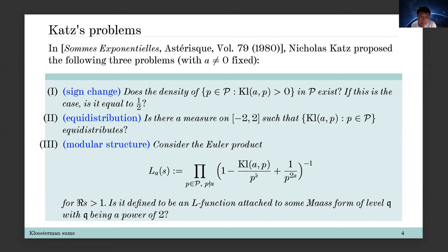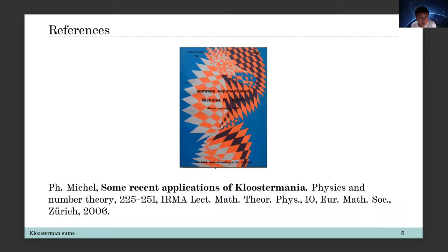This Euler product is absolutely convergent when the real part of s is bigger than one. The question asks whether there is a certain mass form such that this Euler product is given by the L-function of this modular form with a certain level. Equivalently, you can replace this Kloosterman sum by the Fourier coefficient of this modular form at least when p is a good prime. You can also find recent progress and interesting applications in this framework from a paper by Philippe Michel.